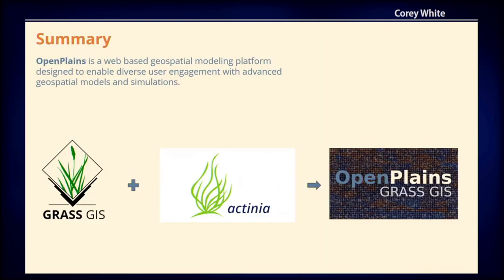So what is Open Plains? It's a web-based geospatial modeling platform designed to enable diverse user engagement with advanced geospatial models and simulations. GRASS is, of course, the core geospatial engine, with Actinia working as the API layer on top. Open Plains is the web client that is utilizing all of this to provide user interactivity to these existing and new geospatial models found in GRASS.